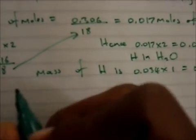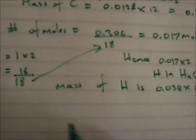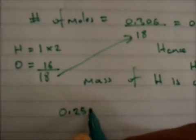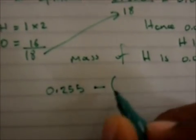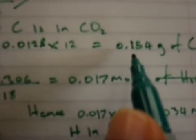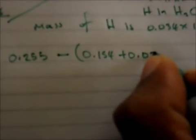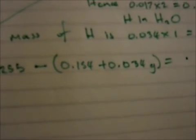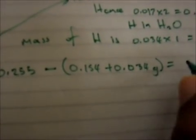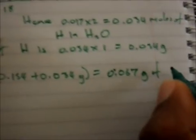Now we calculate the mass of oxygen present. This is simply the total mass minus the sum of the carbon and hydrogen masses. That's 0.255 minus 0.154 grams of carbon plus 0.034 grams of hydrogen. This gives you 0.067 grams of oxygen.